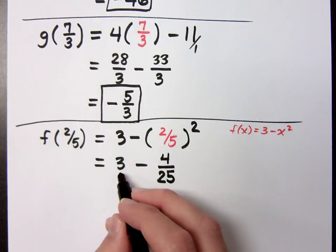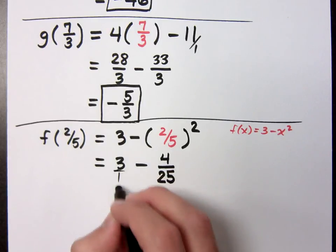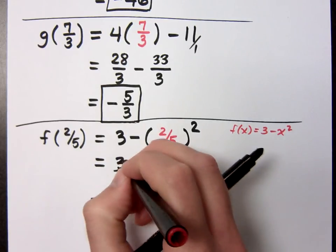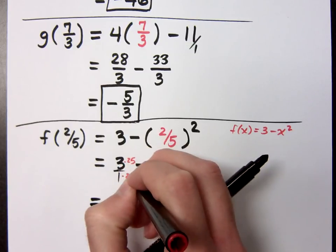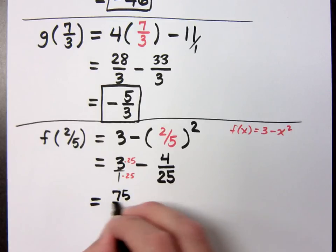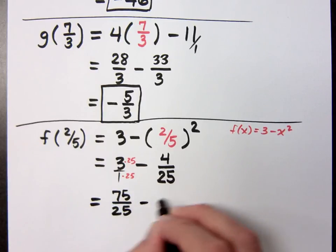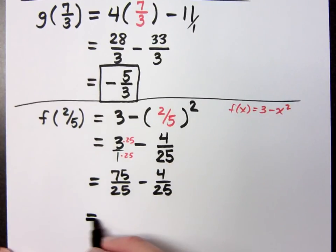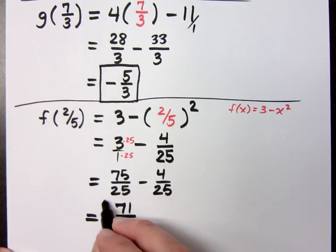Now, since I've got a whole number, put that over 1. What's that common denominator? So, you've got to put in that missing factor of 25. So, 75 over 25 minus 4 over 25 is equal to what? 71 over 25, and then we're all happy. Right?